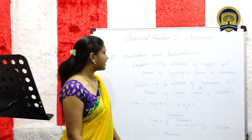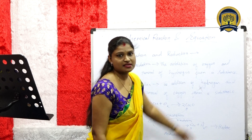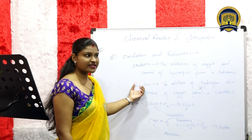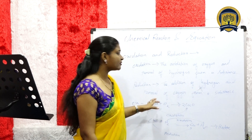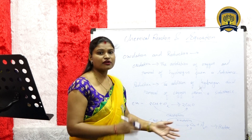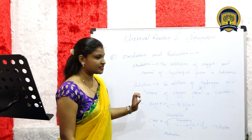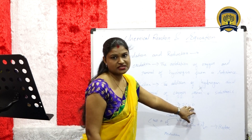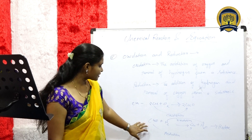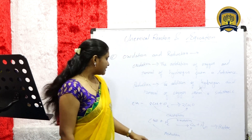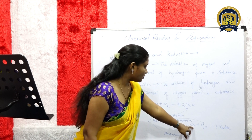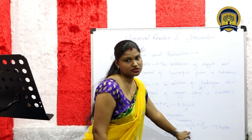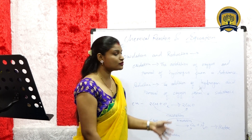Fifth, we have oxidation and reduction. Oxidation means the addition of oxygen and removal of hydrogen from a substance. Reduction reaction is just the opposite of oxidation: addition of hydrogen and removal of oxygen. For example, 2Cu plus O2 gives 2CuO — here oxygen is added, so this is oxidation. Next reaction: CuO plus H2 gives Cu plus H2O — here oxygen is removed from CuO and H2 is added, so CuO is reduced. When oxidation and reduction both occur together, the reaction is called a redox reaction.